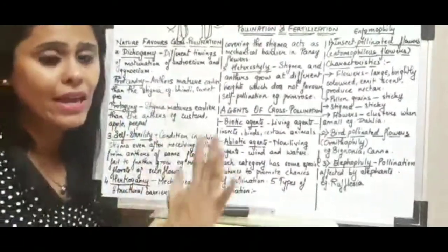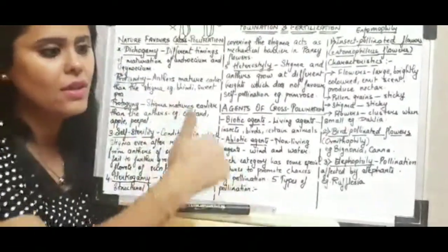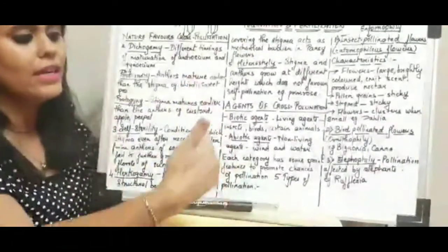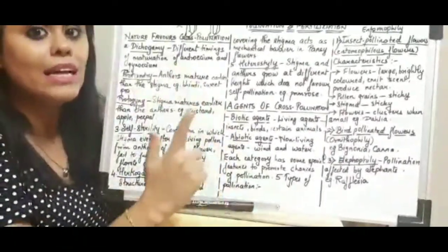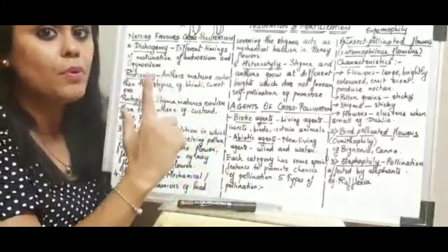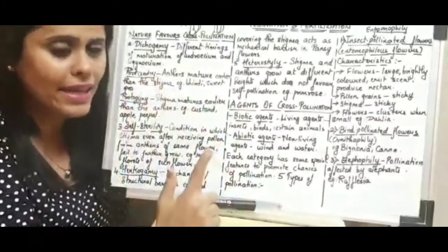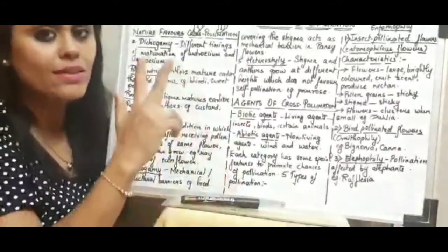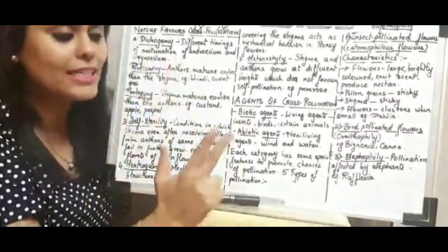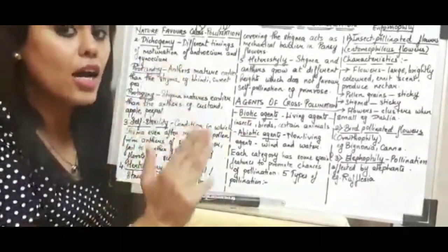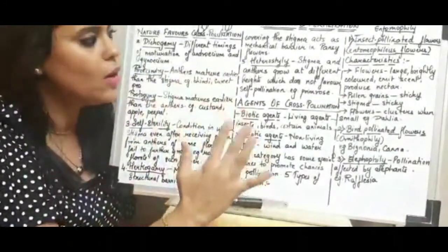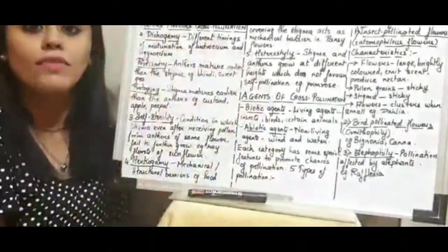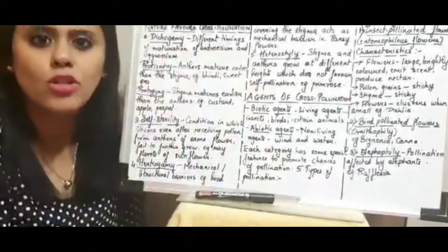These are the five important devices. To recap: unisexuality, dichogamy — which has two types, protandry and protogyny — self-sterility, herkogamy, and heterostyly. These five devices favor only cross-pollination and not self-pollination.